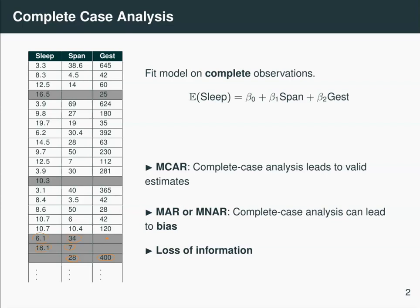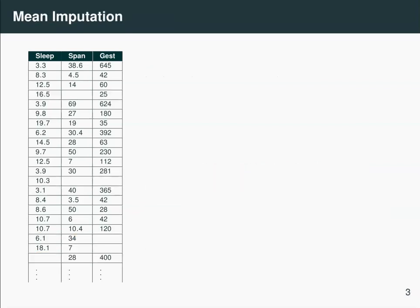Another popular approach is mean imputation. In this approach, you replace the missing data with the mean of the observed data for that variable. For example, for the column on sleep, you would take the mean of the data that you have on sleep, and you would impute the missing value with that mean.